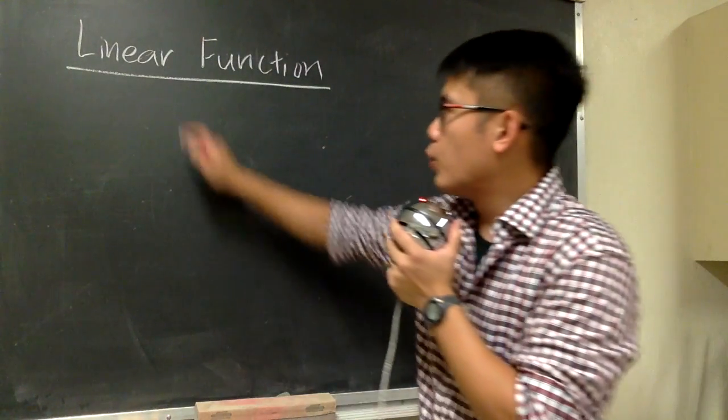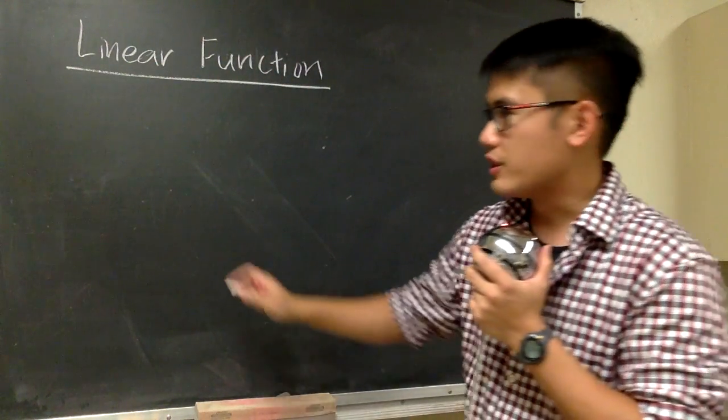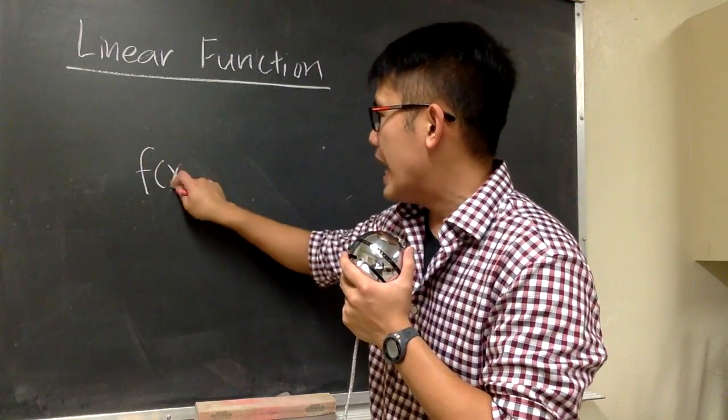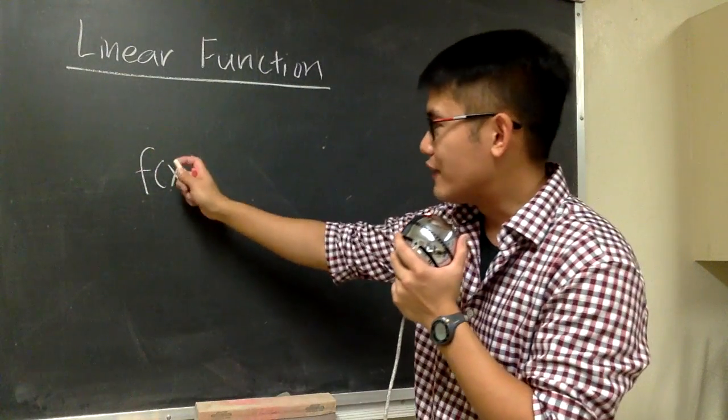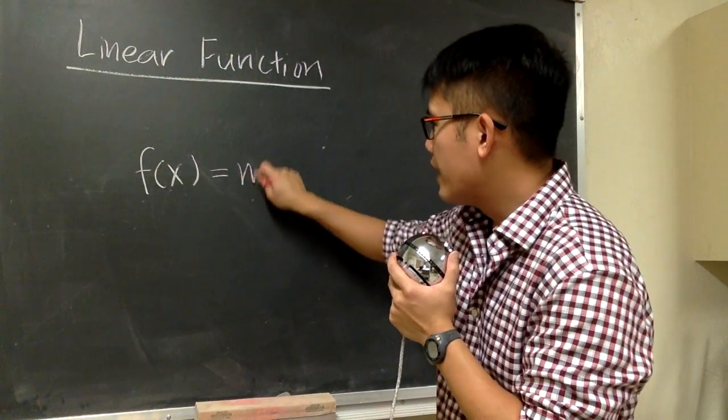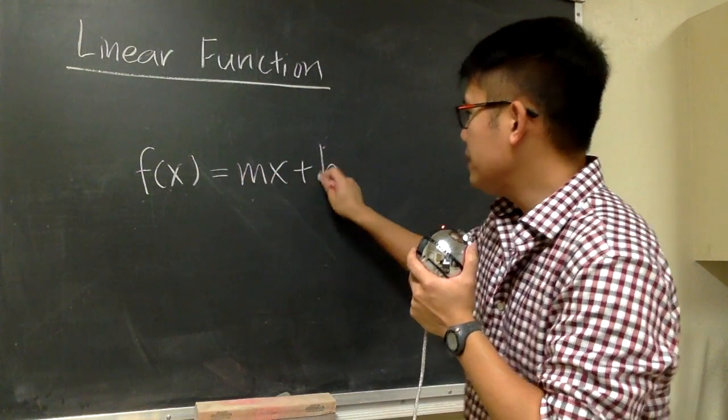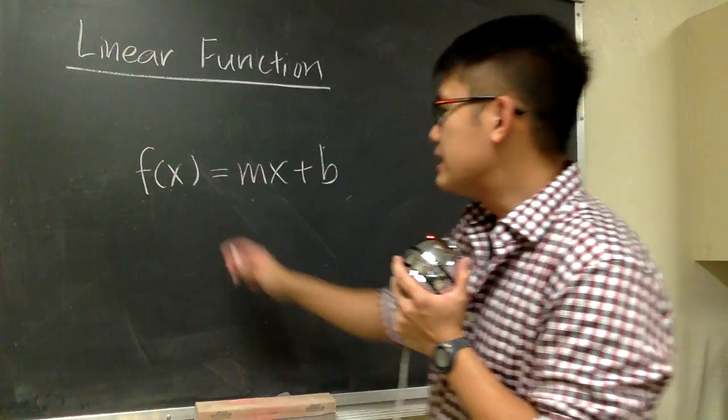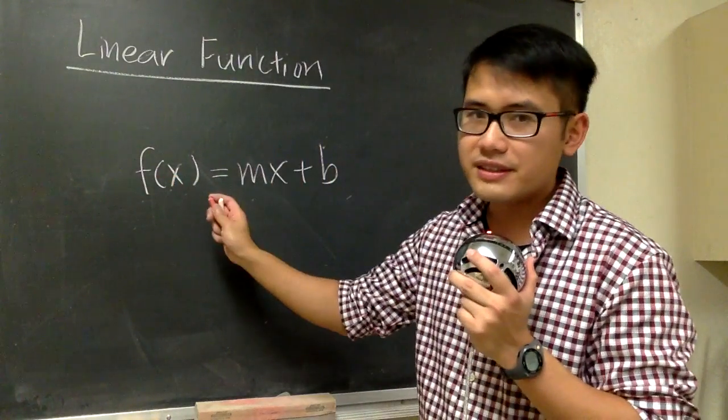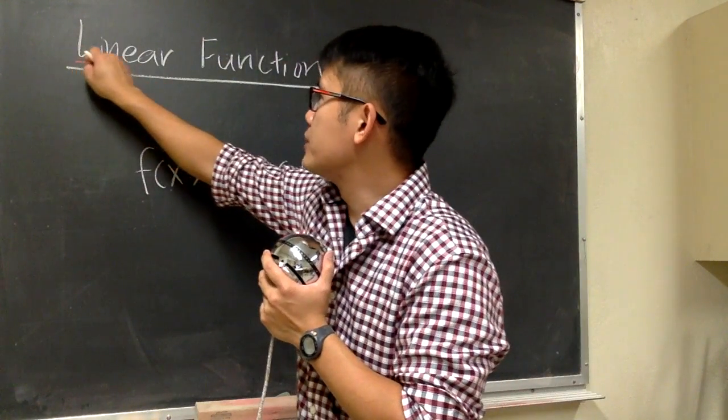In this video, we'll be talking about what a linear function is. So let me write this down right here first. f of x is the function notation, and whenever we have a function in the form of mx plus b, this is a linear function. The reason this is called a linear function is because whenever you graph this, you are going to end up with a line, a straight line.